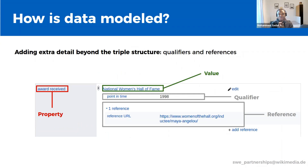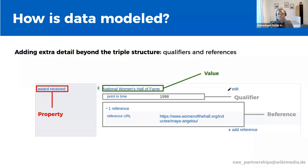Aside from the basic triple model, we can also add extra details to contextualize Wikidata statements by adding qualifiers and references. Qualifiers allow statements to be expanded and annotated beyond what is expressed. For example, the statement 'Maya Angelou — award received — National Women's Hall of Fame' can have the qualifier 'point in time: 1998' added to show when the award was received. We may also add references to point to specific sources that back up that claim, since Wikidata statements should be supported by verifiable sources.